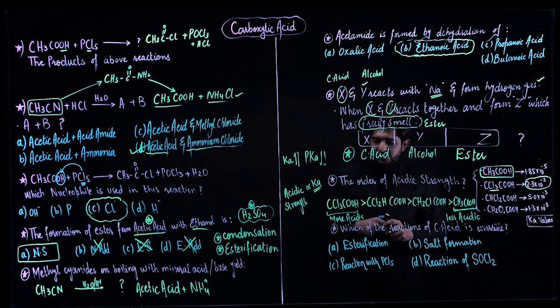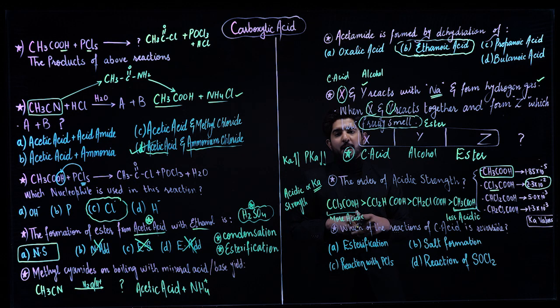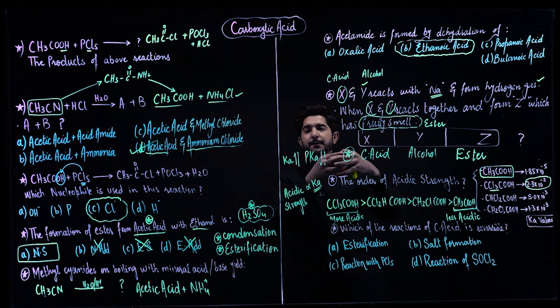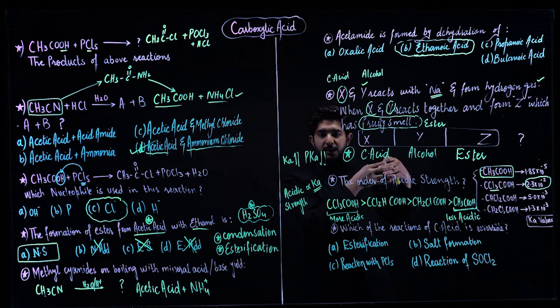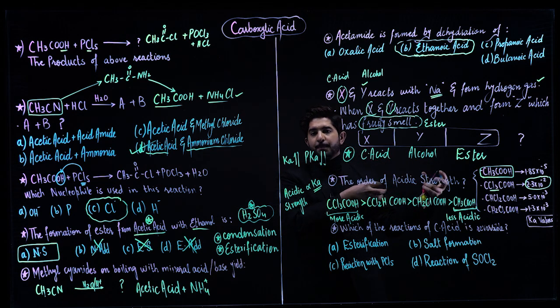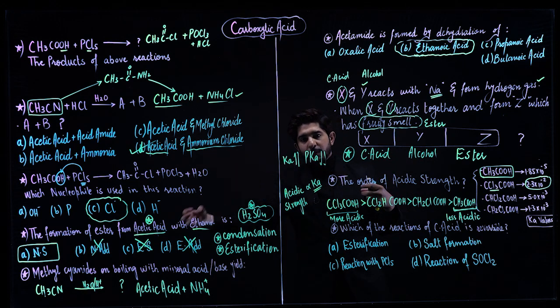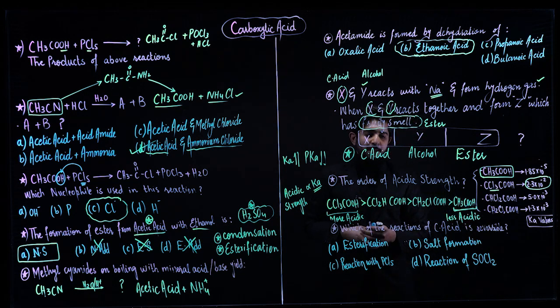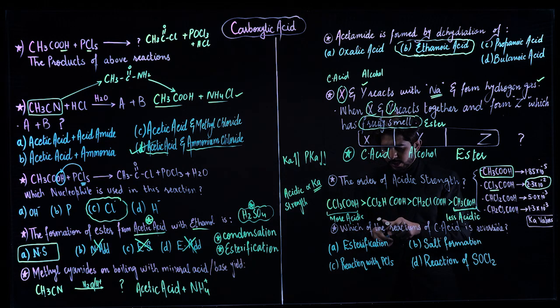Last question: which reaction of carboxylic acid is reversible? This reaction we've already discussed - that is esterification. In esterification, carboxylic acid and alcohol react together and give you ester along with water elimination. This same process is hydrolysis which gives you the same products again. Hydrolysis and condensation, that is a reversible process. So we'll select esterification for the correct option.